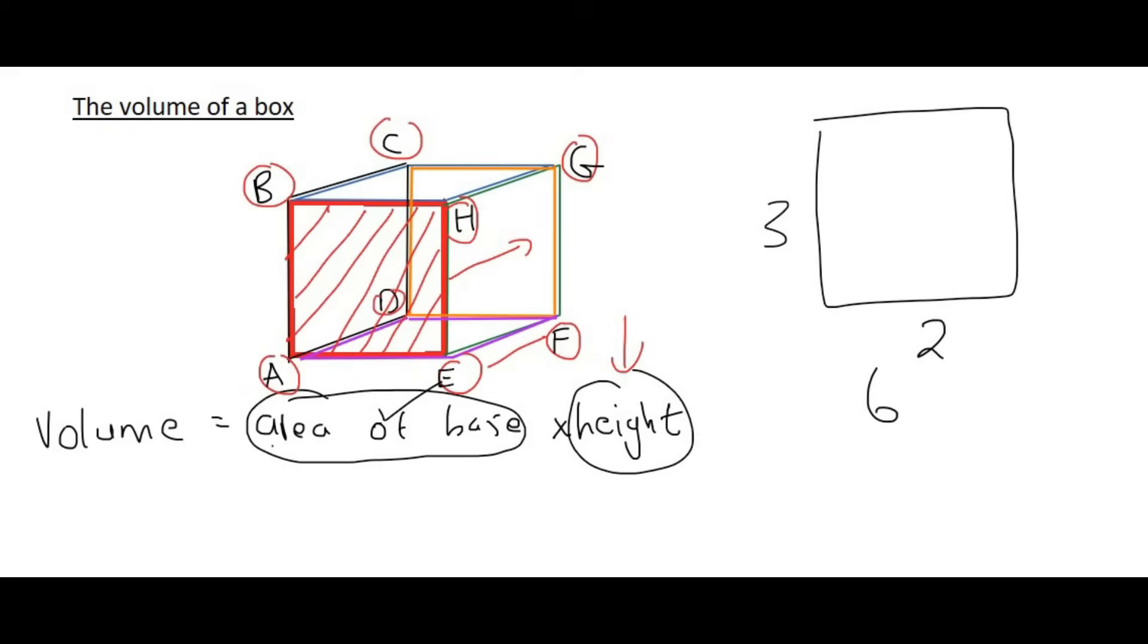You'd have to drag it in that direction over there. So let's say the distance from E to F was four. So then your area of your base is six times your height, which we're going to call four.